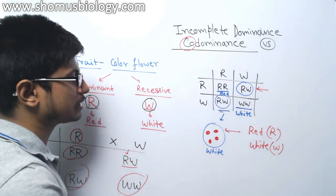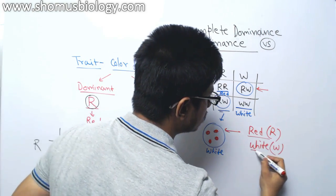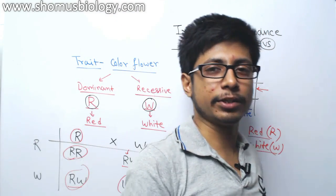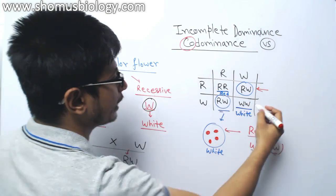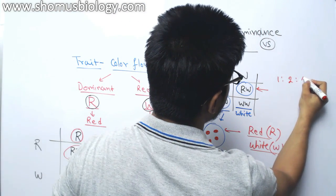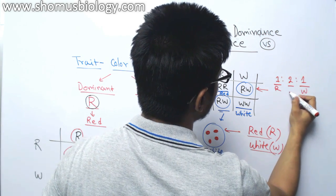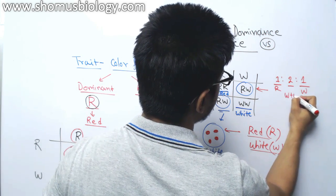So codominance because both those alleles are acting as a dominant factor, they show up in the next generation. And the ratio if you get to be one is to two is to one again, one for red, one for white and the two are for the white with red spot.